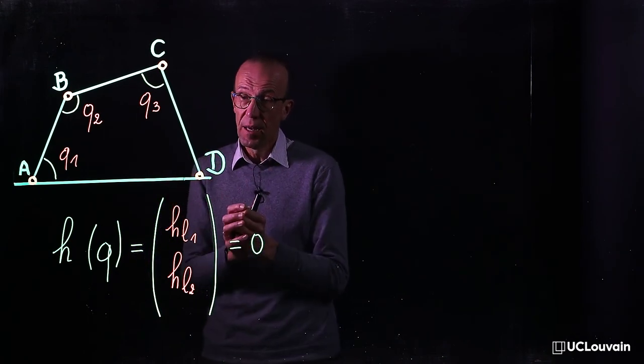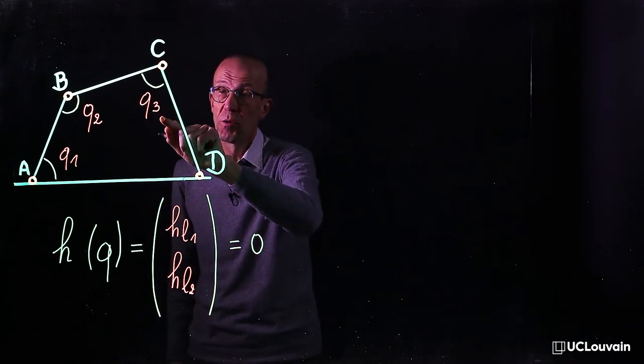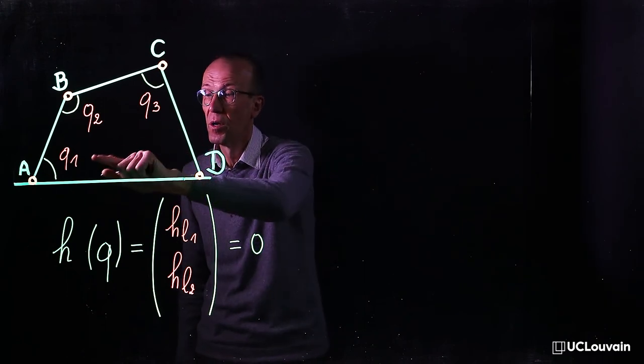And they tell that two coordinates, let's say q2 and q3, can be geometrically expressed in terms of the first one, q1.